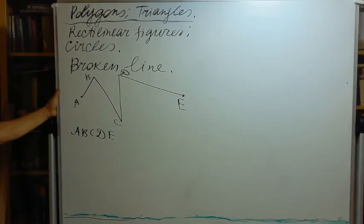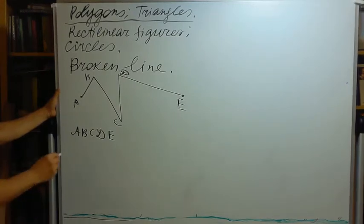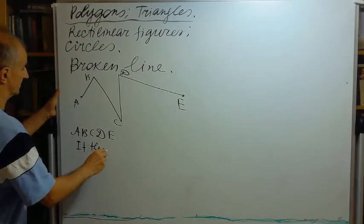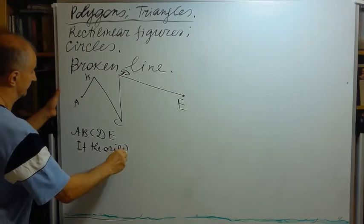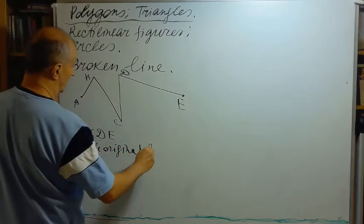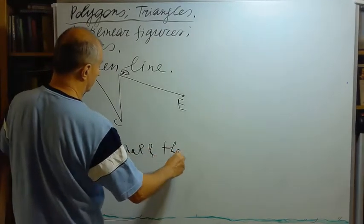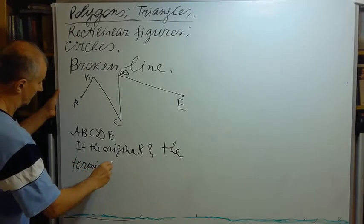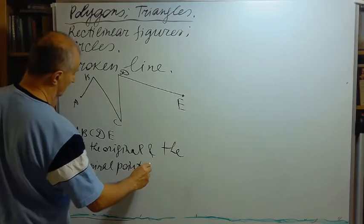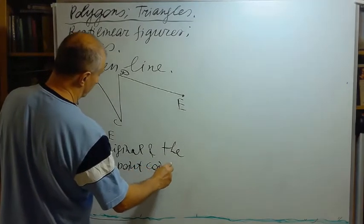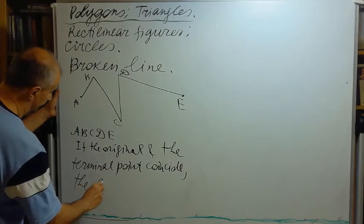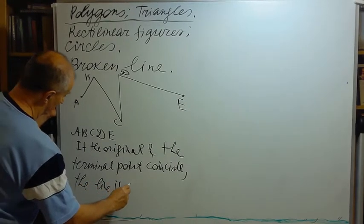If the original and the terminal point coincide, the line is closed.